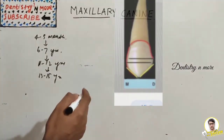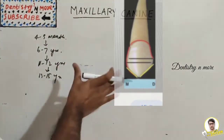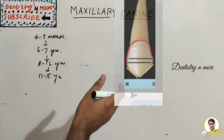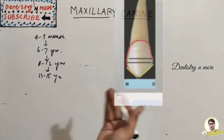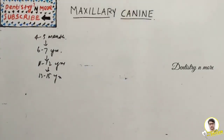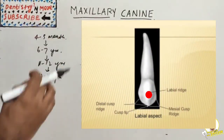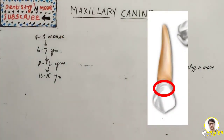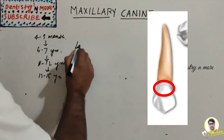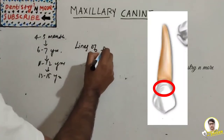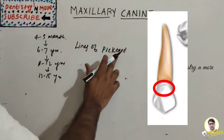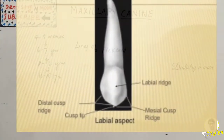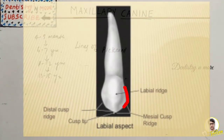On the labial aspect, the crown is narrower mesiodistally than the maxillary central incisor. It has two cusp ridges — the mesial slope and distal slope — with the mesial slope shorter than the distal slope. The labial surface is smooth and bulky in the middle due to the labial ridge. Imbrication lines, known as lines of Pickerell, can often be found in the cervical third. The mesial outline is convex and rounded at the mesio-incisal angle.